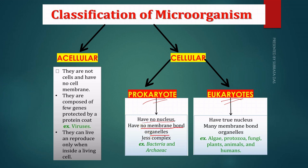They have no membrane-bound organelles. If you have a nuclear membrane, you have a nuclear organelle — you have mitochondria, you have organelles. These are the main eukaryotic microorganisms. For example, algae, protozoa, fungi, plants, animals, and humans.